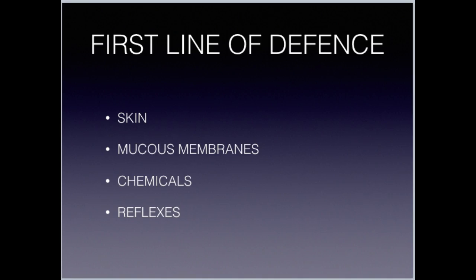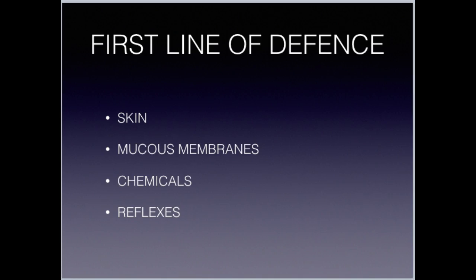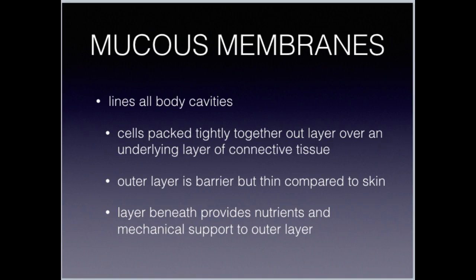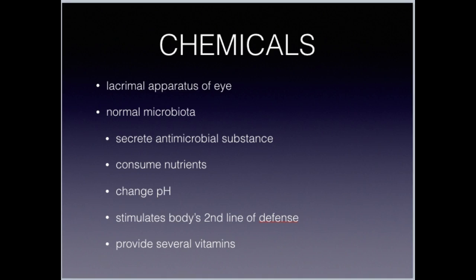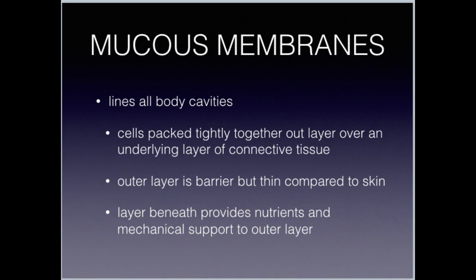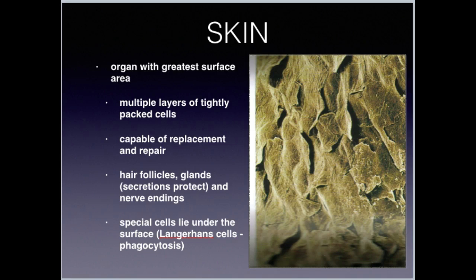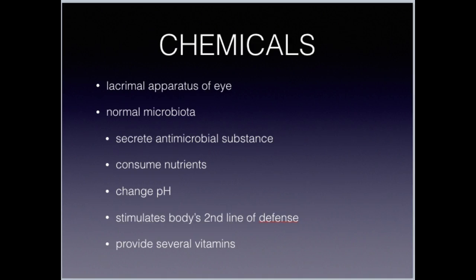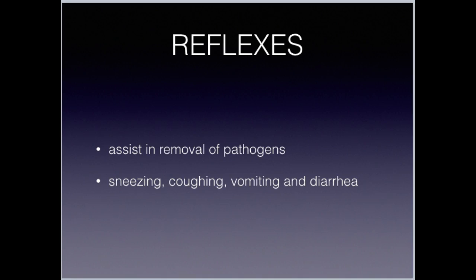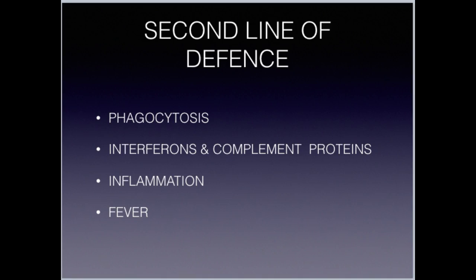The non-specific lines of defense include our skin, mucous membranes, chemicals, and reflexes. These two courses cross over — we'll be talking about Langerhans cells in Essential Body this week. Our second line of defense is phagocytosis and the production of interferons and complement proteins, inflammation, and fever.